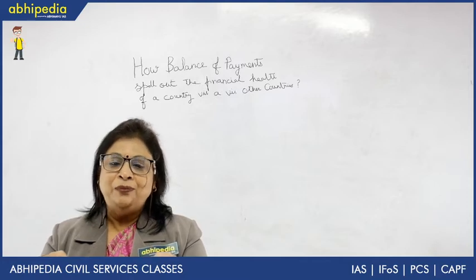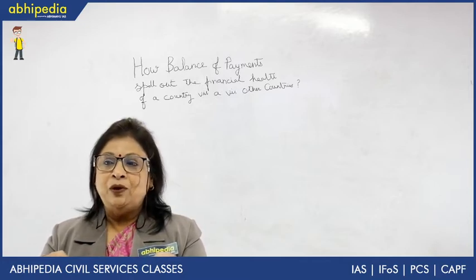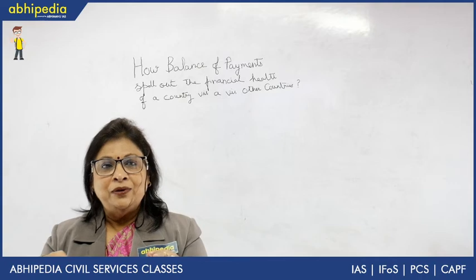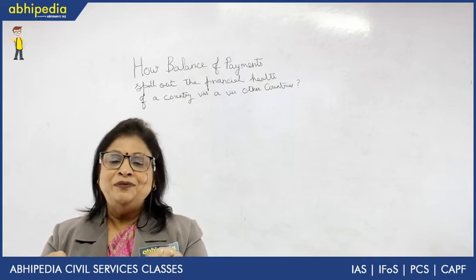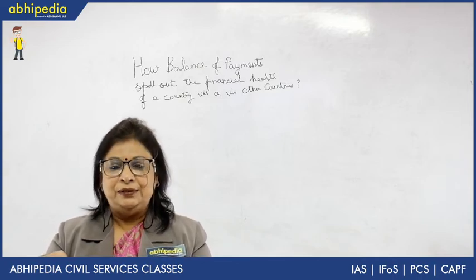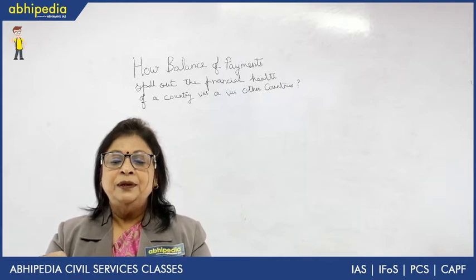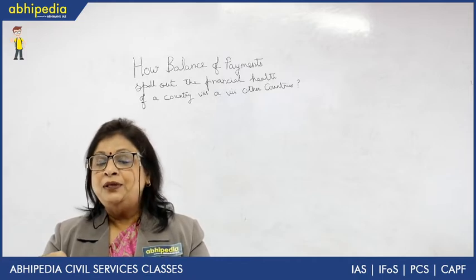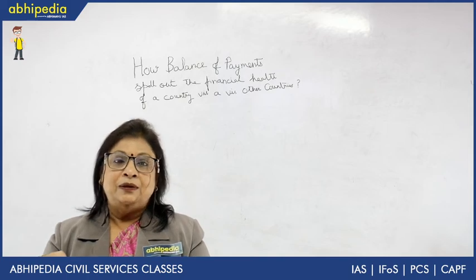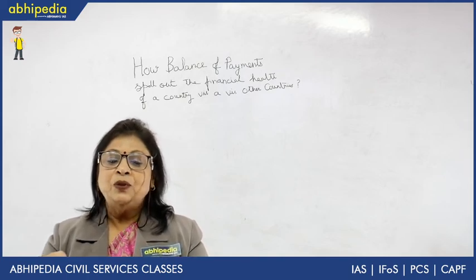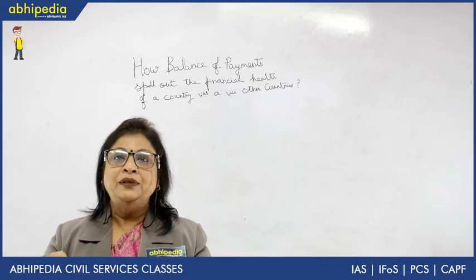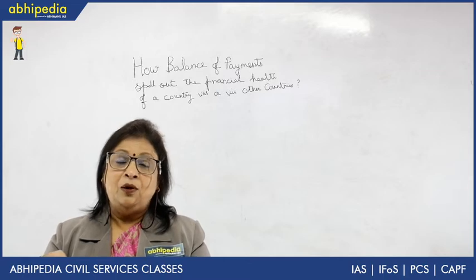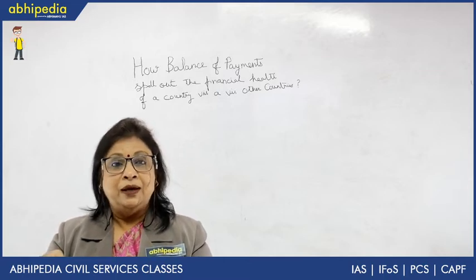Another important feature of balance of payment is that we follow the double entry system of accounting. Under the double entry system, debit is equal to credit and credit is equal to debit. It is self-balanced because if there is any discrepancy in any of the accounts, we transfer it to the other account, and this way it is self-balanced. Besides that, balance of payment also includes government as well as non-government transactions of one country with respect to other countries of the world.